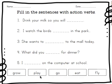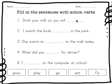Which verb down here do you think makes the most sense to complete that sentence? Did you say grow? Drink your milk so you will grow. Awesome job. You're going to get a pencil and write the word grow up here on that dotted line. After you write grow, you can cross that word out because you've already used it. Then you're going to go on to the second sentence.